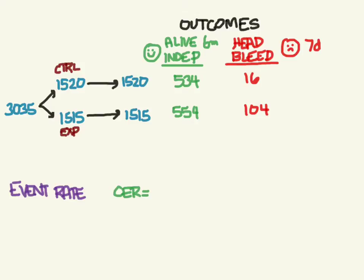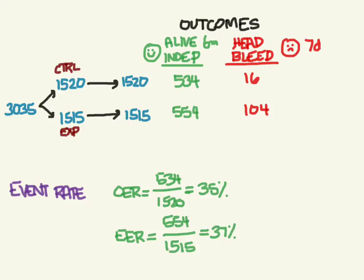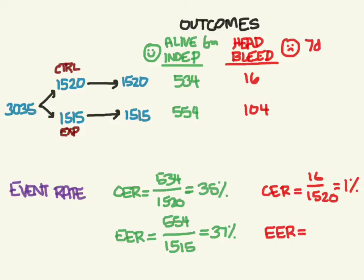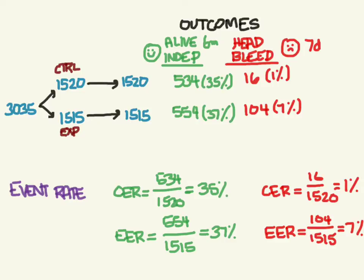We'll calculate four event rates — the control event rate (CER) and experimental event rate (EER) for each outcome. For the good outcome: CER = 534 / 1520 = 35%; EER = 554 / 1515 = 37%. For the bad outcome: CER = 16 / 1520 = about 1%; EER = 104 / 1515 = about 7%.